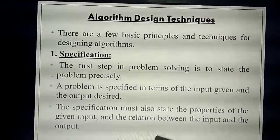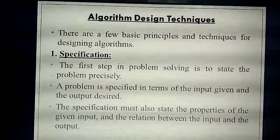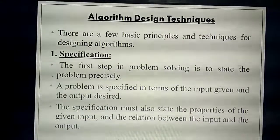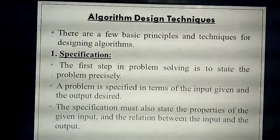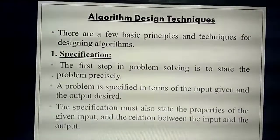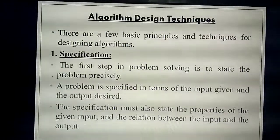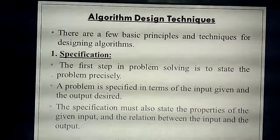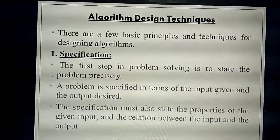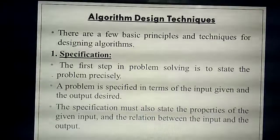Next, you need to specify the relation between input and output. For example, in a mathematical problem where LHS equal to RHS, using the input variables you are solving the problem and giving the output as LHS equal to RHS. So, three points in specification: first, study the problem thoroughly and state it precisely; second, specify the number of inputs and what output you will get; third, specify the properties of the input as well as the relation between input and output.